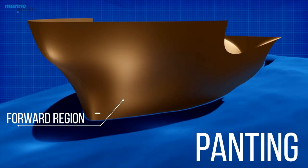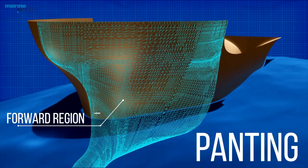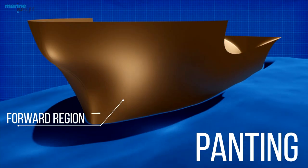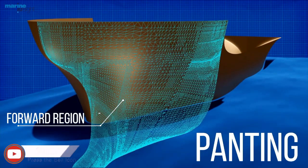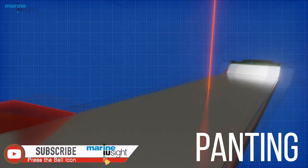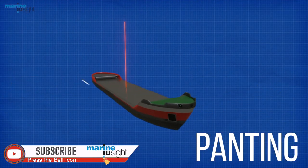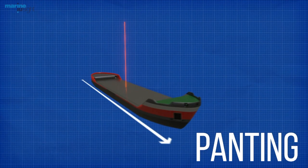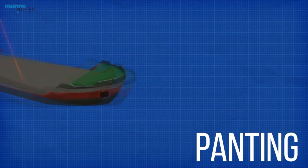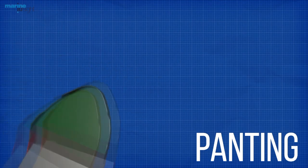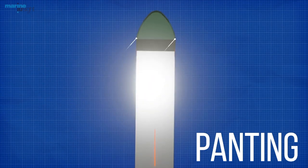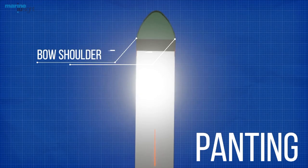The ship bow region is the most affected area where the entire vessel encounters the wave system for the first time. Although panting is still said to exist throughout the entire length of the hull, the effect dies away as the wave system at the bow starts losing its energy from the bow shoulder onwards.